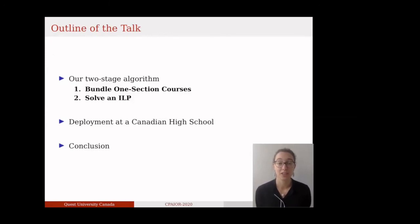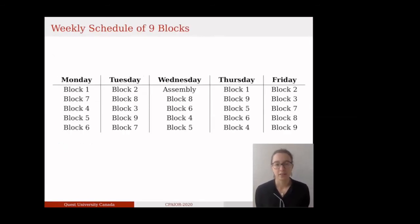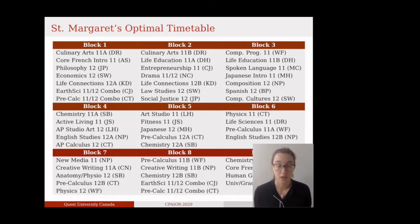Similarly to Quest University, St. Margaret needed a timetable that accommodates all self-designed interdisciplinary schedules of each student at the school. We provided and implemented the probably optimal timetable, and in this talk I'll explain you how we built it. We conceived a two-stage algorithm that first finds an optimal coloring of a weighted conflict graph for single-section courses, and then it solves an integer linear program, or ILP for short, to generate the final timetable. Every year, St. Margaret runs a weekly schedule comprising of nine blocks, where blocks are simply the time slots during which courses take place. For example, a block can run from 8 to 9 in the morning, or 9 to 10, and so on.